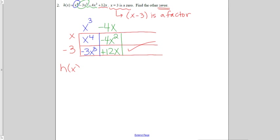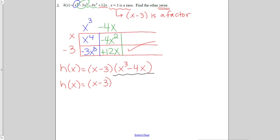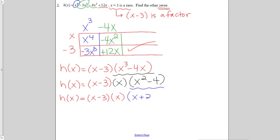Now h of x is factored into x minus 3 times x cubed minus 4x. I want to see if I can factor those further. x minus 3 is nicely factored. But if I look at x cubed minus 4x, I can take an x out as a GCF, and then I'd have x squared minus 4 left. I have x minus 3, then x, and now x squared minus 4 — that's a difference of squares. It can factor into x plus 2 times x minus 2. This is now factored completely.